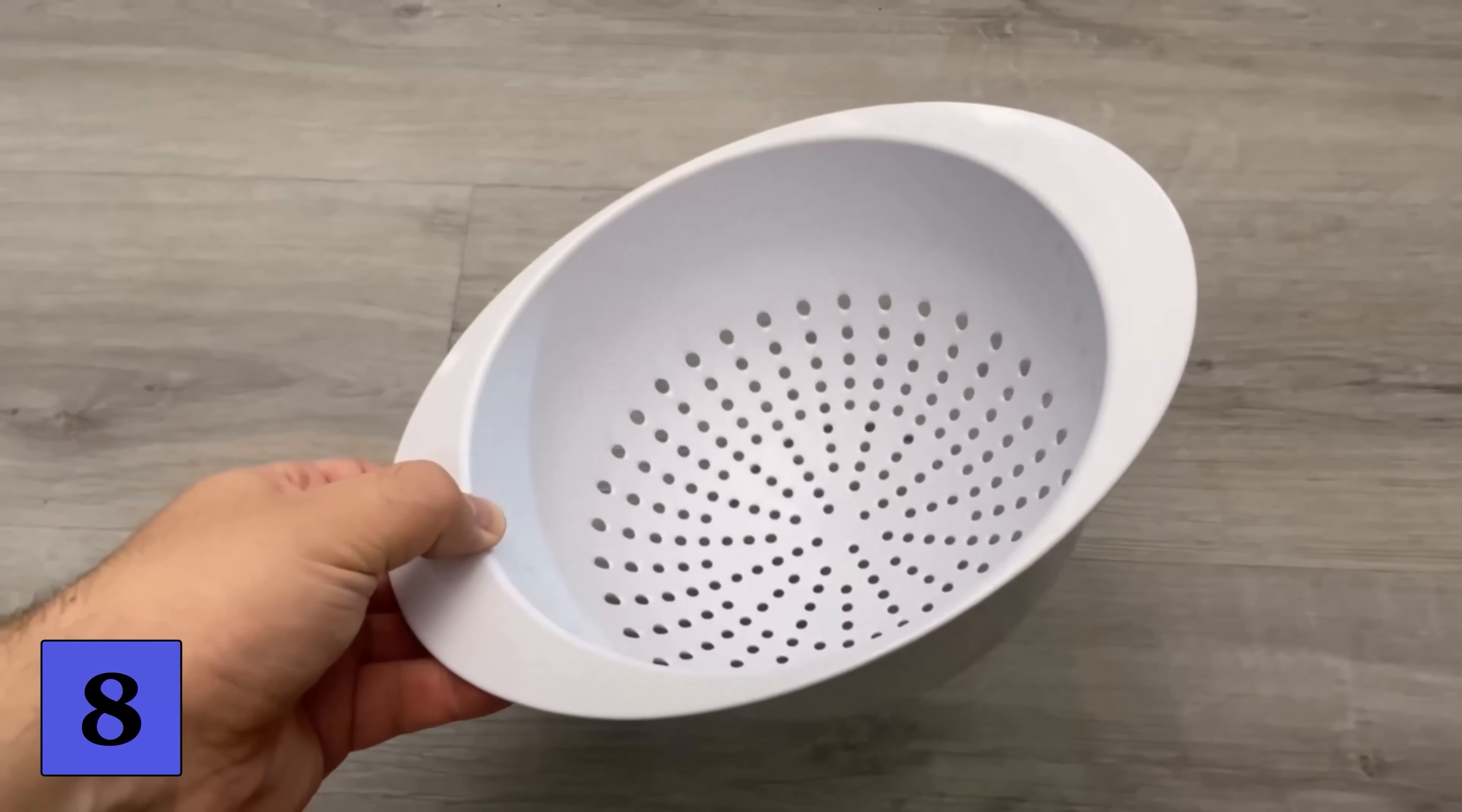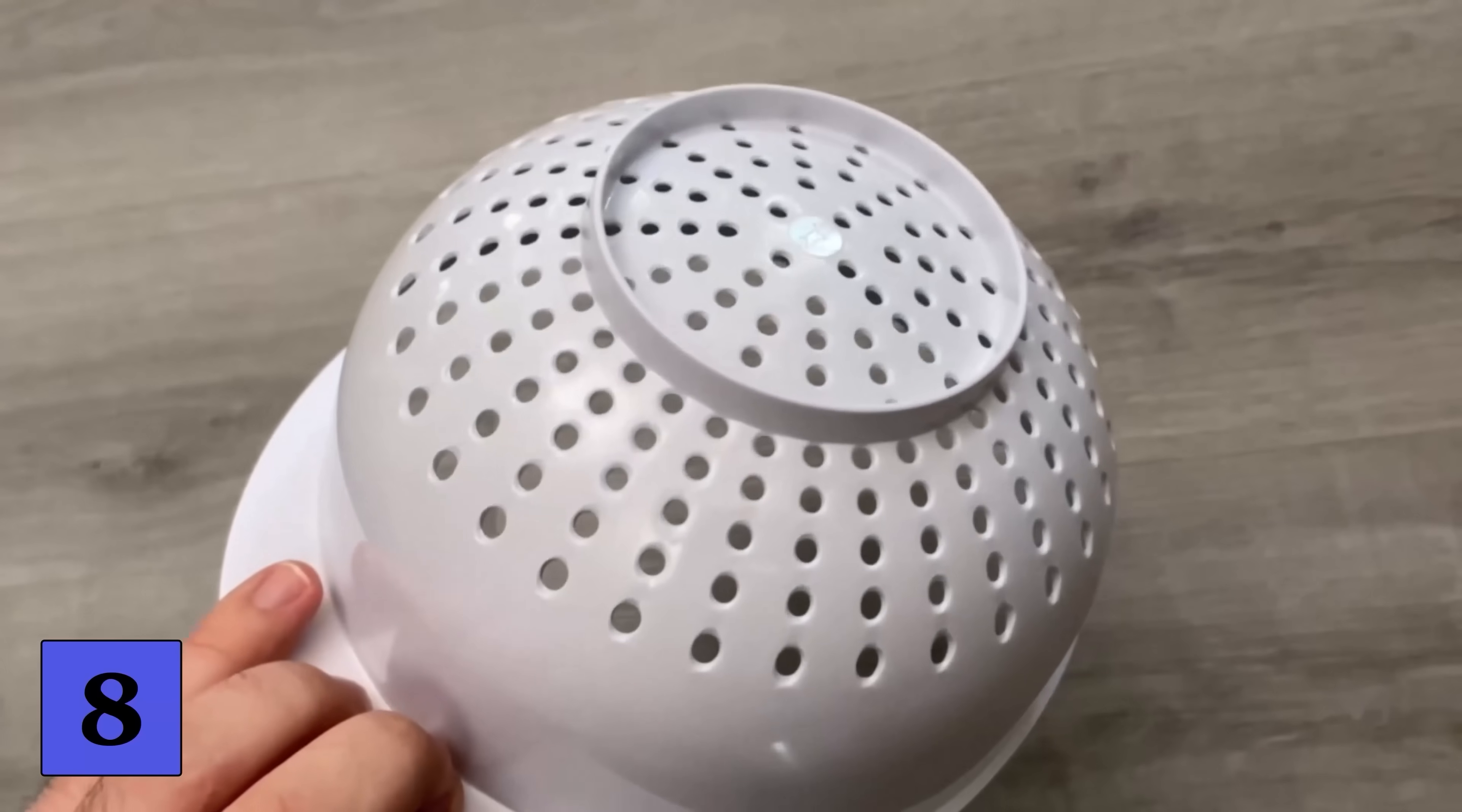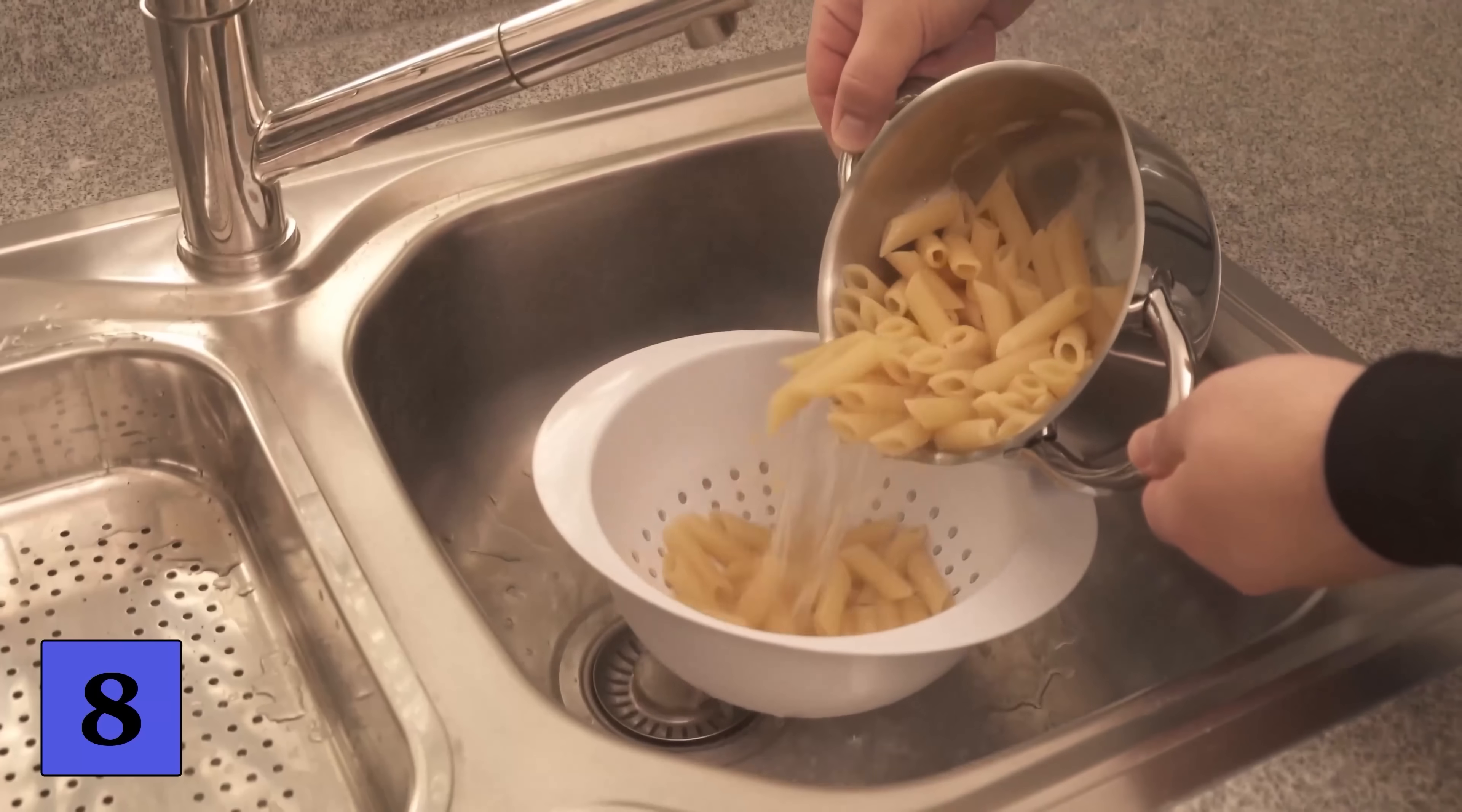And even if it sounds strange now but even a pasta strainer can be used incorrectly or there is simply a variant that works much easier. Because most of the time you will certainly do it the way I'm going to show you now. You have cooked the noodles or rice and now put the colander in a sink and then tip them directly into the colander. This allows the water to drain off.